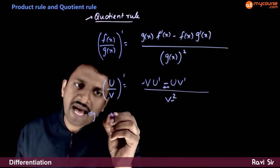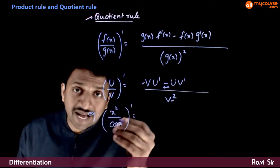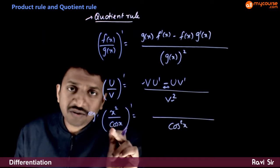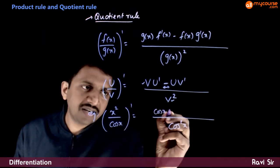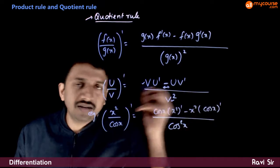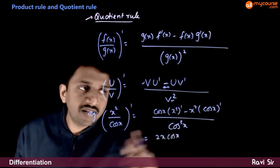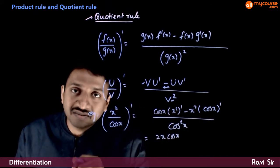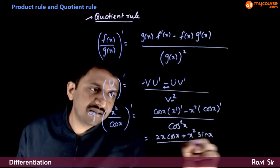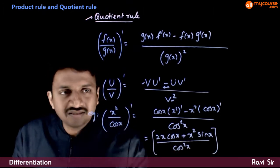For example, if you have x²/cos x and want to differentiate it, the denominator is cos²x. In the numerator, starting with v: cos x times the differentiation of x² (which is 2x) minus x² times the differentiation of cos x (which is −sin x). So you get 2x·cos x + x²·sin x, all divided by cos²x. This is the differentiation of x²/cos x.